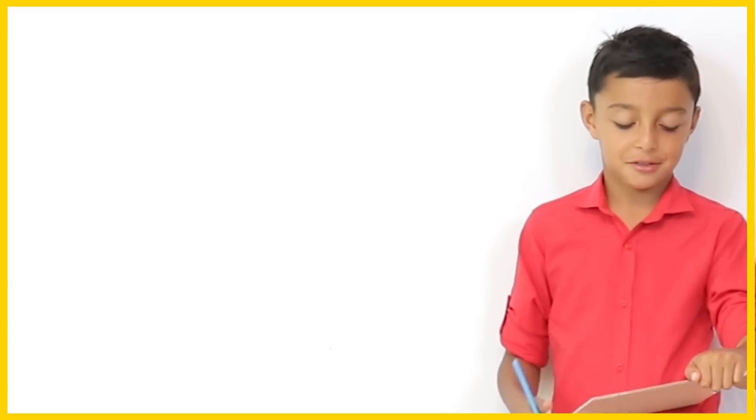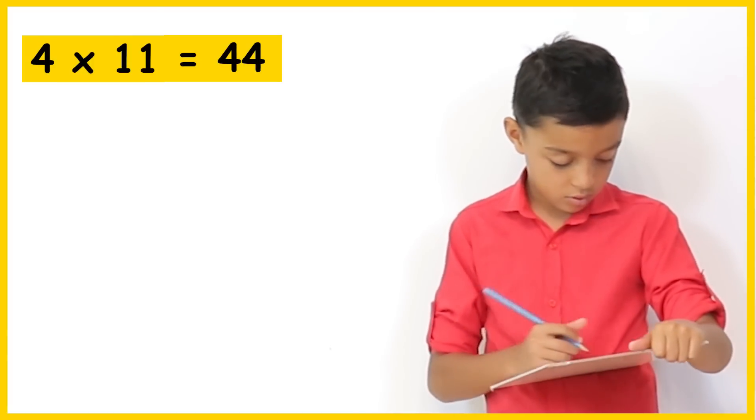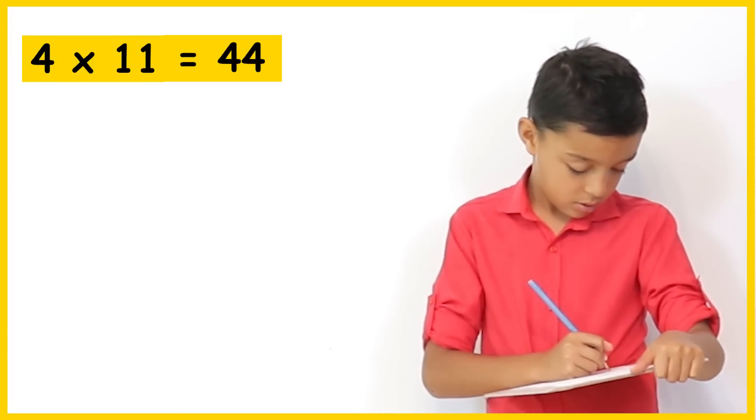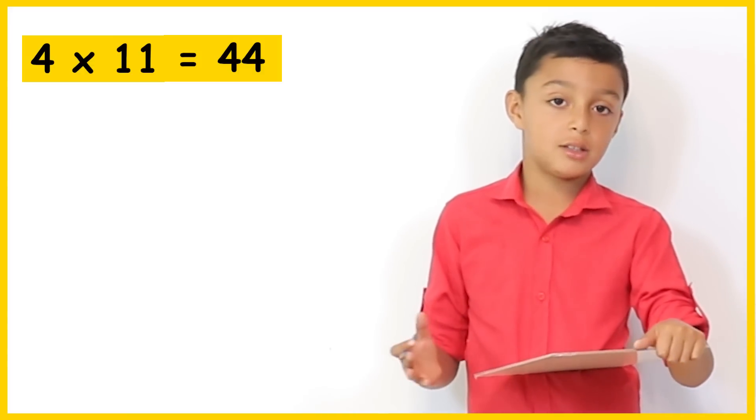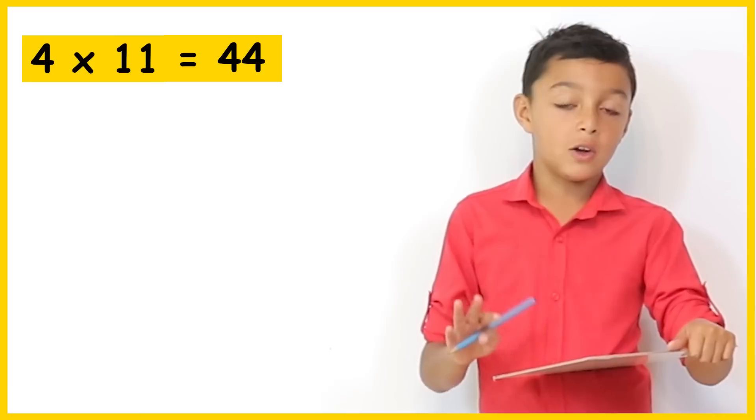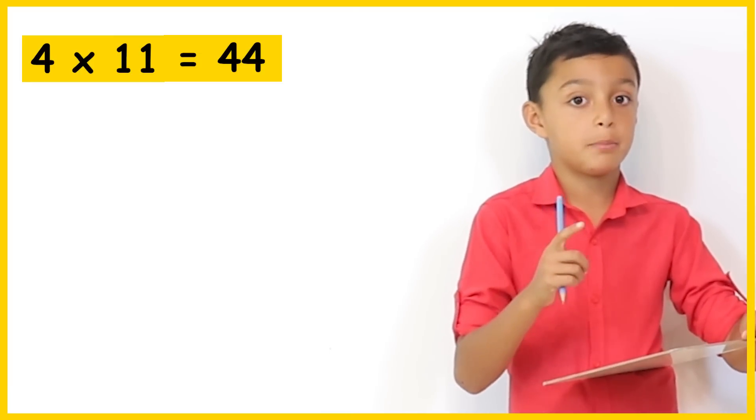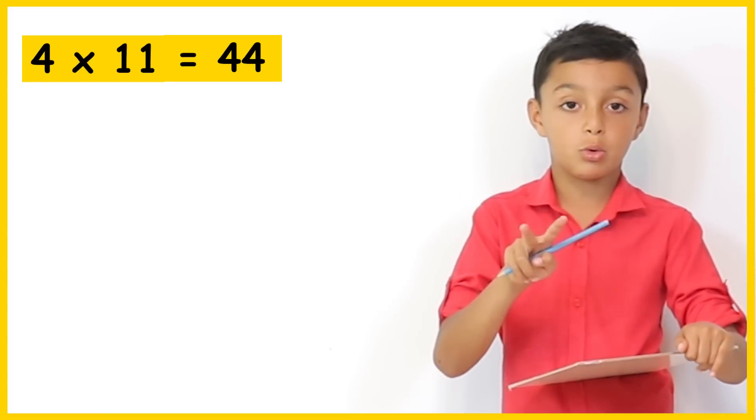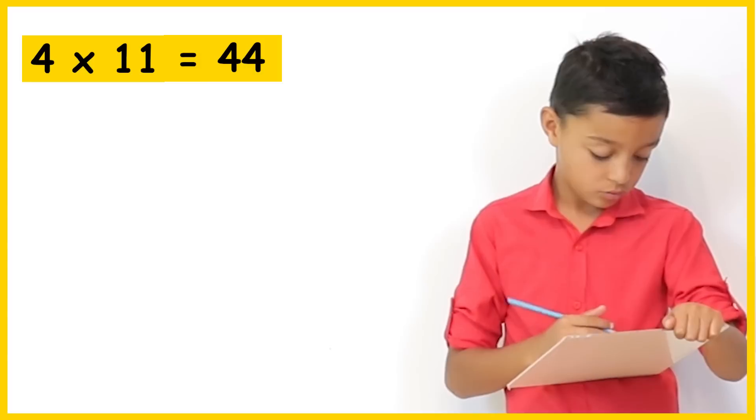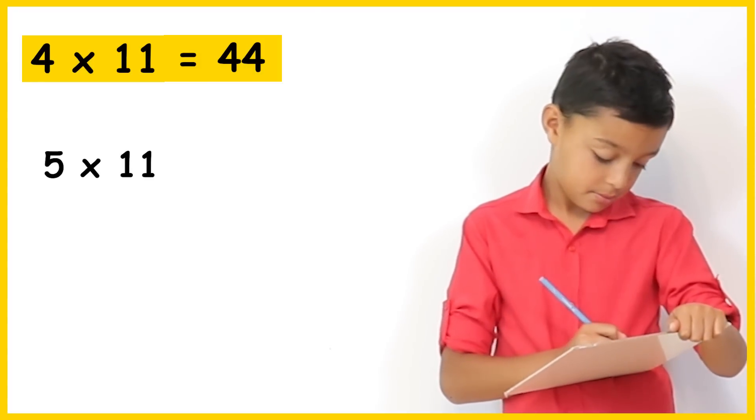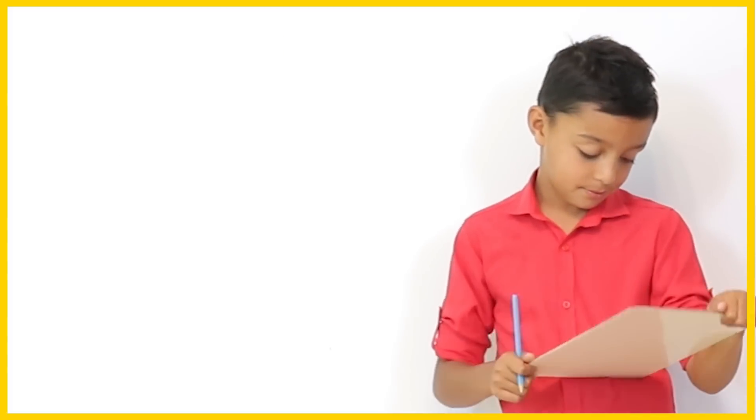So can you tell us what the answer to 4 times 11 is? 44. 44. So you knew that already. Because when something times 11 up to 10 times 11 it will always be 11 or 22 so there will always be 2 digits that are the same. So what's 4 times 11 again? 44. So 5 times 11? 55. 6 times 11? 66. I see what you mean. Brilliant.